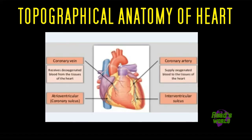Moving on to the sulci of the heart — there are grooves on the surface of the heart and these grooves are known as sulci. There are two main sulci: the atrioventricular and interventricular sulcus. The atrioventricular sulcus is also known as the coronary sulcus; it runs transversely around the heart and represents the wall dividing the atria from the ventricles.